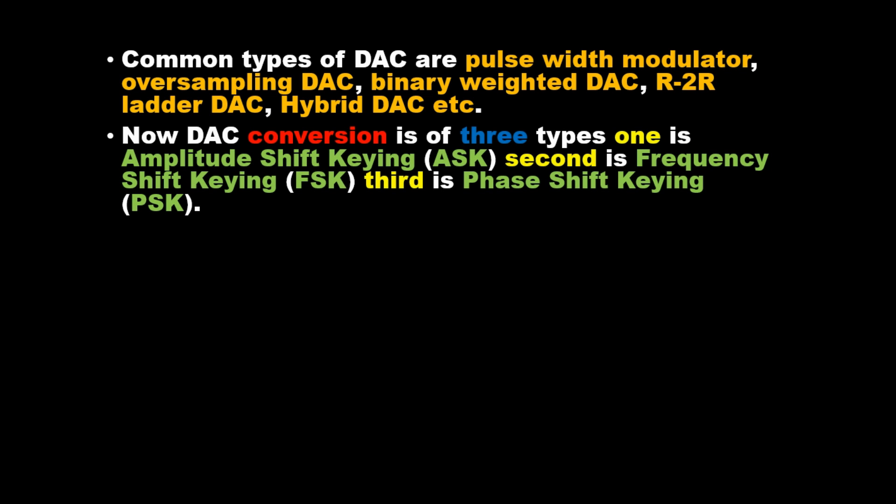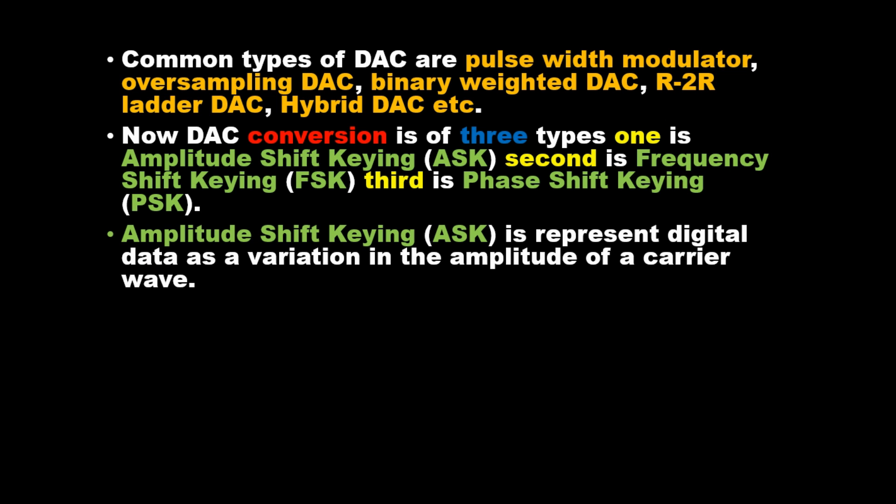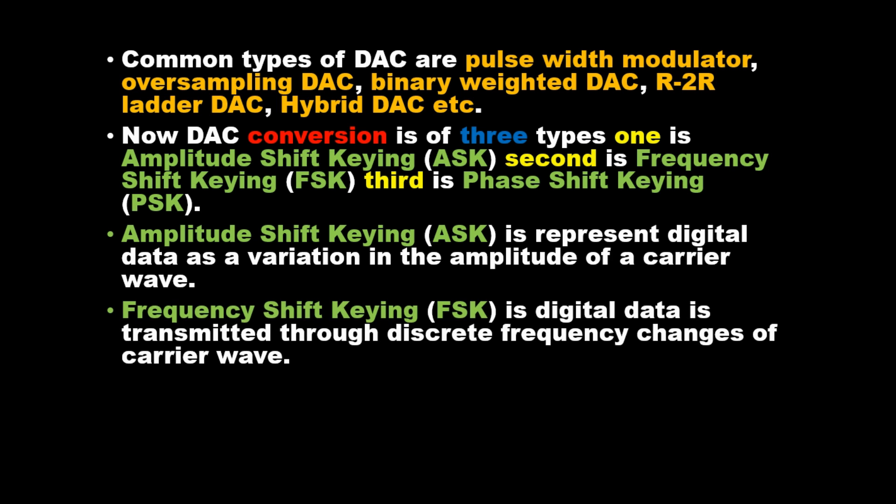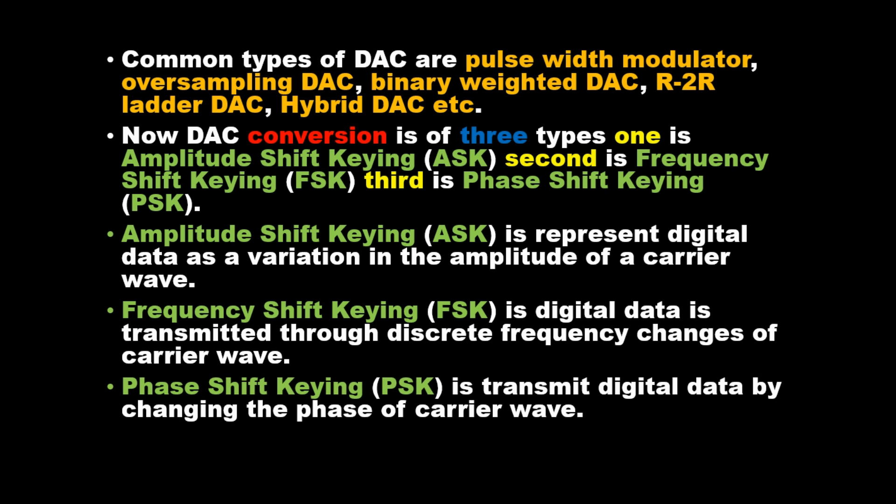DAC conversion is of three types. First is amplitude shift keying (ASK), which represents digital data as a variation in the amplitude of a carrier wave. Second is frequency shift keying (FSK), where digital data is transmitted through discrete frequency changes of a carrier wave. Third is phase shift keying (PSK), which transmits digital data by changing the phase of the carrier wave.